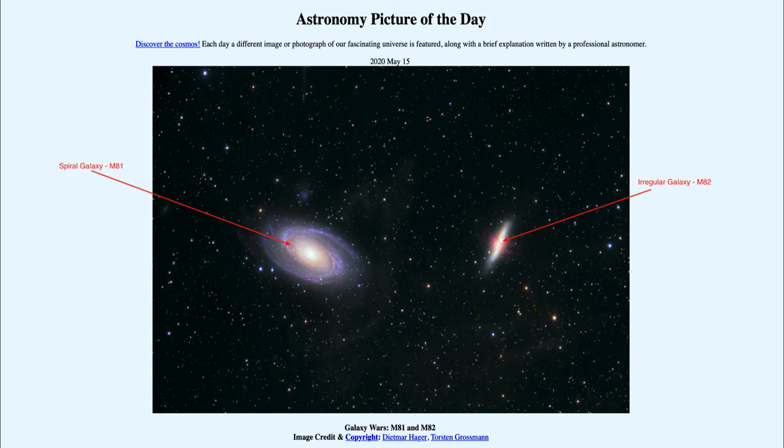So galaxies have changed and evolved over time due to these gravitational interactions and collisions and combining together. And that process still continues to this day, as we see in a number of galaxies that are interacting, including the pair that we see here today.